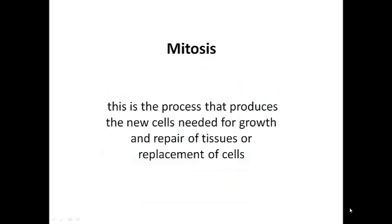The first type of cell division we're going to look at is mitosis. This is the process that produces new cells for growth — remember, we all started as one single cell and we're now made of billions of cells — and for repairing damaged tissue or the routine replacement of cells in our body.